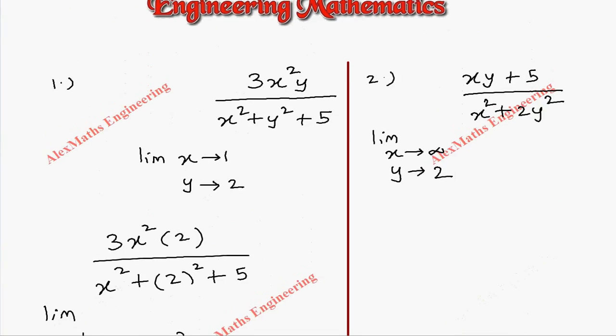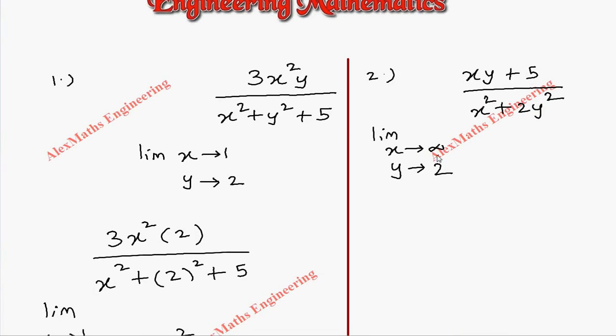Coming to the second question, we have x tending to infinity and y tending to 2. So first let's substitute the value of y. So x into 2 plus 5 whole divided by x square plus 2 into 2 square.